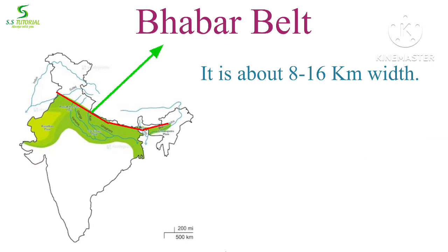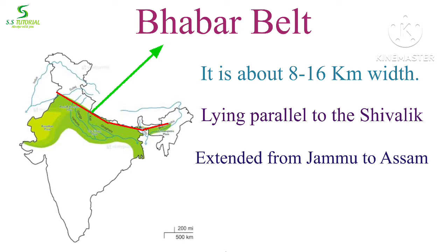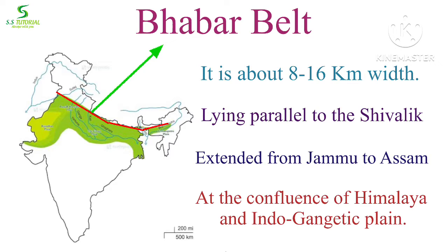Bhabar is a narrow belt which is about 8 to 16 kilometers wide, lying parallel to the slopes of the Siwalik from Jammu to Assam, at the confluence of the Himalayas and the Indo-Gangetic plain.